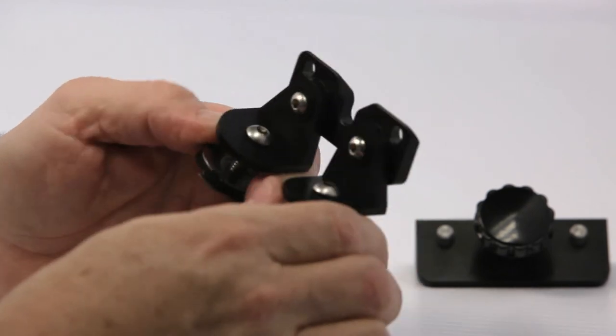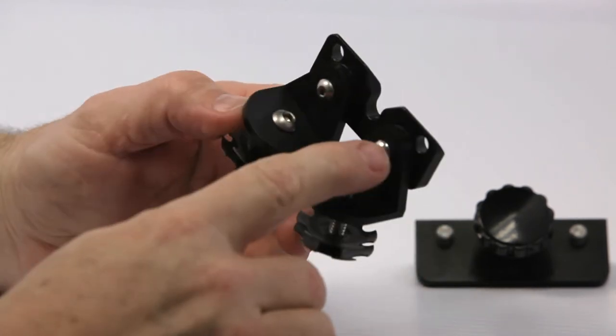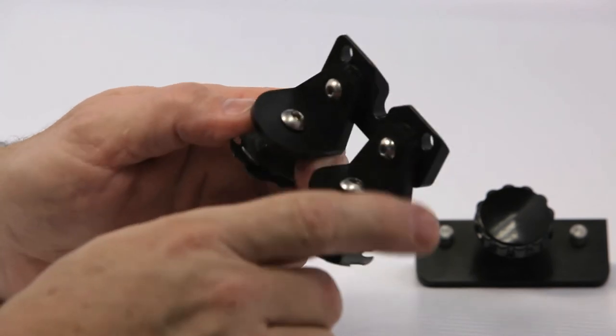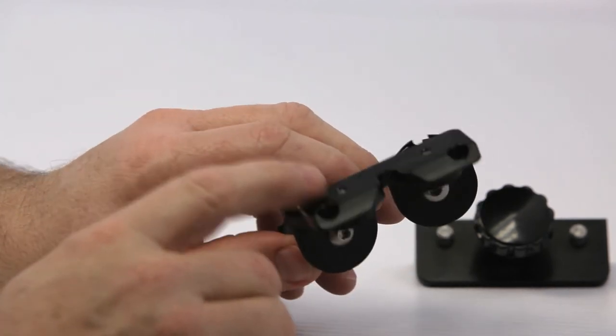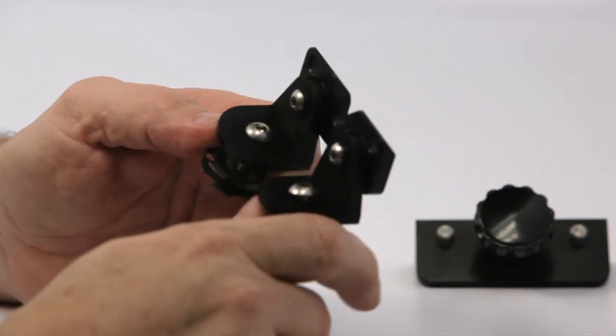Screws are torqued down and loctited in place so that they won't back out. If you do need to remove these, you can re-loctite your screws after you move them.